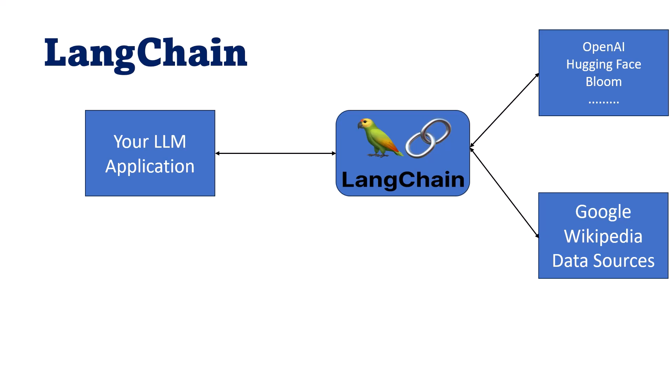That framework is LangChain. Using LangChain you can gather data from Google, Wikipedia, or your own data sources, and you can use OpenAI GPT 3.5 or GPT 4 models, or if you want to save cost you can use Hugging Face, Bloom, and many other models. If you go to the LangChain quick starter page, you can see it provides support for many different models including OpenAI and Hugging Face, and you can also gather data from Google, Wikipedia, and your own custom data sources.